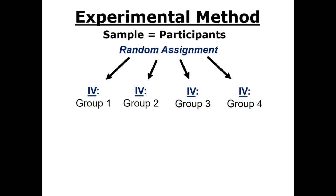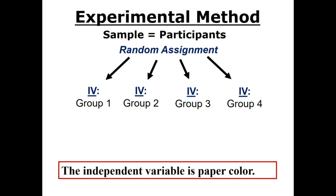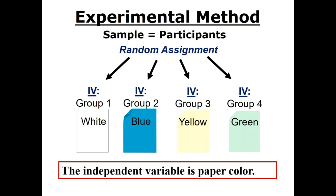Tall, Acres, and Hodge wanted to know if paper color has a direct influence on students' exam performance. The best way to find out is to conduct an experiment. So they identified a sample of participants and then randomly assigned them to different groups. The different groups get different variations on the independent variable. The independent variable is paper color. They actually had more than four groups, but the slide would get too cluttered, so four are shown: white, blue, yellow, and green.